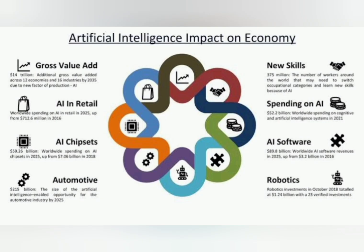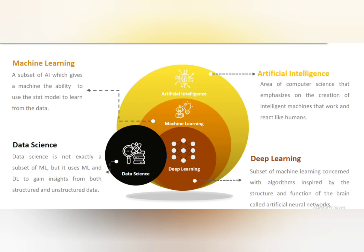The potential of artificial intelligence is very large, which is why so many specializations have emerged — AI, ML, and data sciences. AI has applications in the retail industry, automotive software, AI chipsets, robotics, and everywhere else. That's why this is a very high-demand branch.